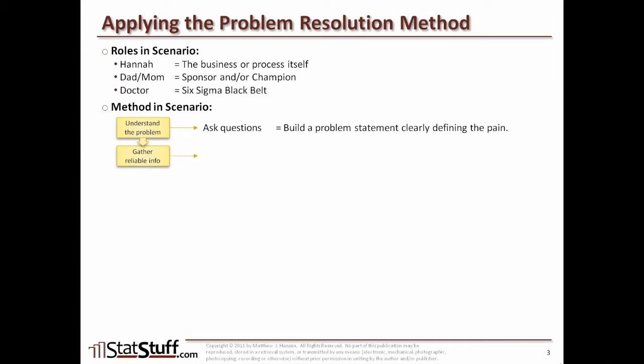The next step — gathering reliable information — is like the doctor taking a swab from my daughter's throat to test for strep. The doctor had a suspicion of the root cause, so she gathered information from the right source: the throat, not the foot or underarm. In the same way, when gathering reliable information about a business problem we need to collect reliable data from the right source to test our suspicions about the root cause.